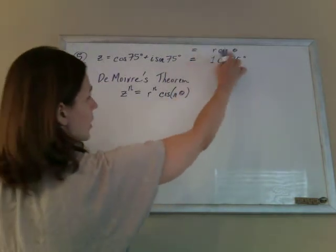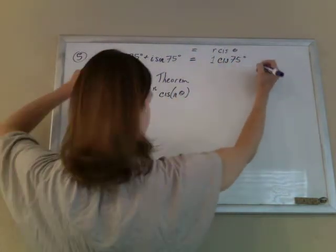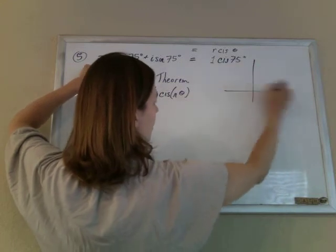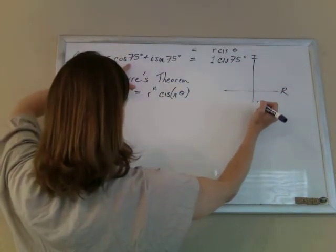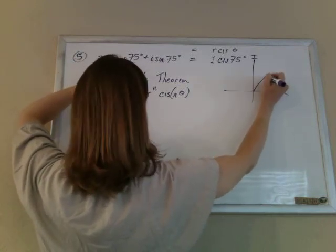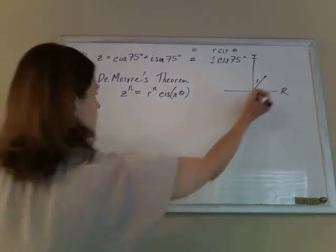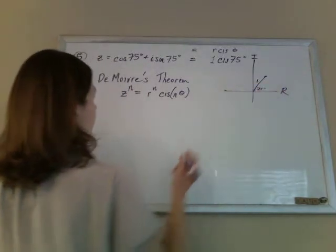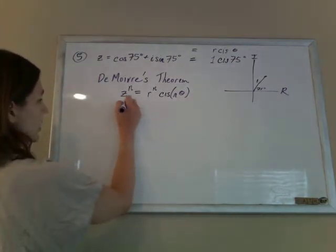Now just for kicks, we can graph this original one, the real and imaginary axis, and it says that the angle would be 75 degrees, and the radius would be 1. But they don't want to know where the original is, they want to know where z cubed is.